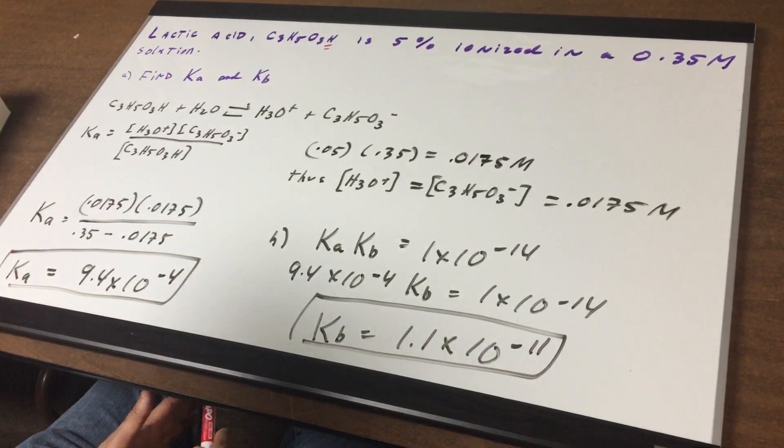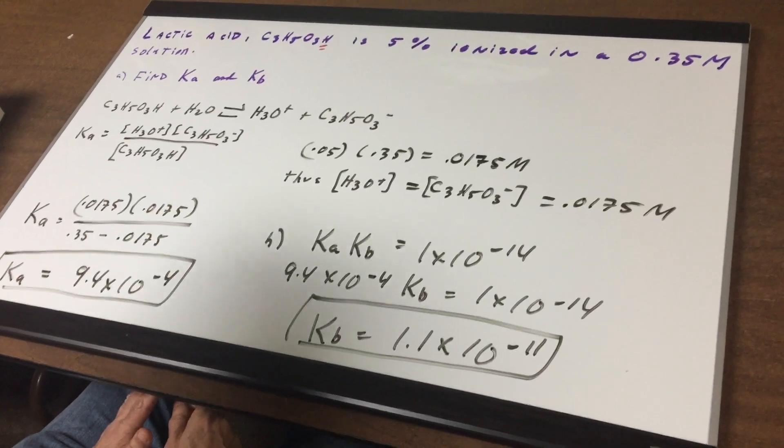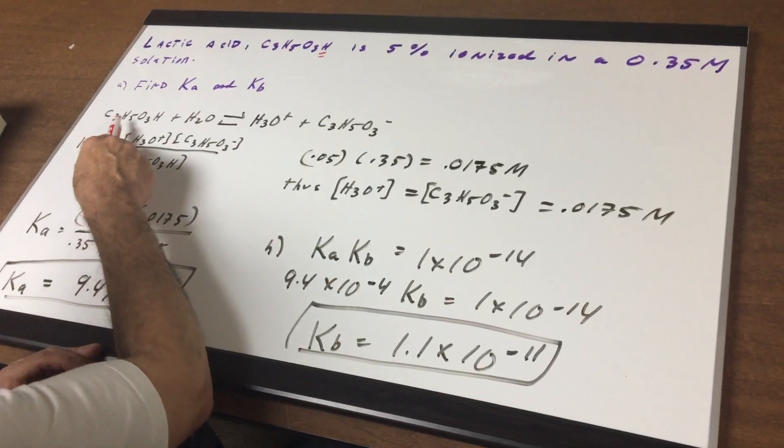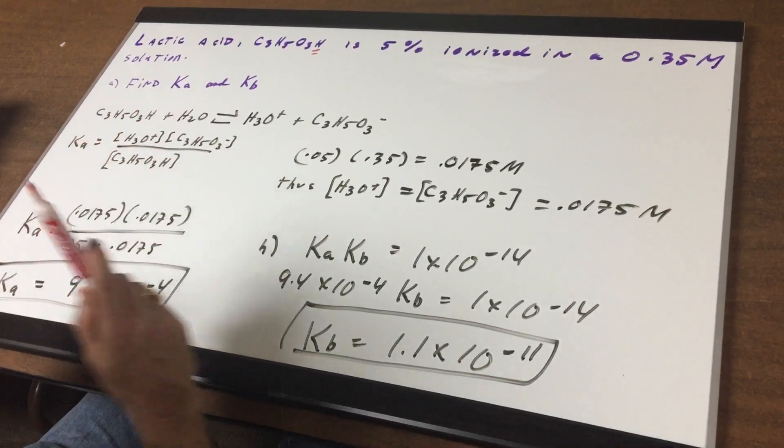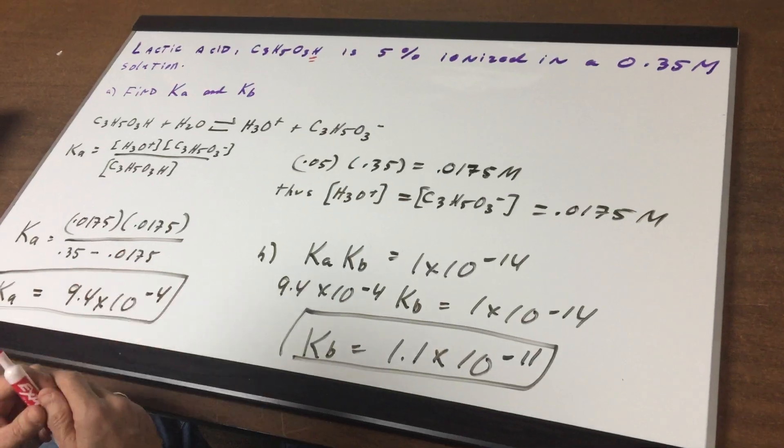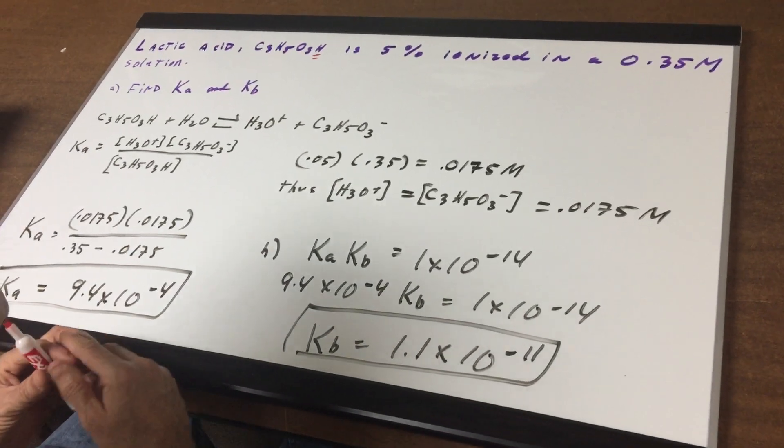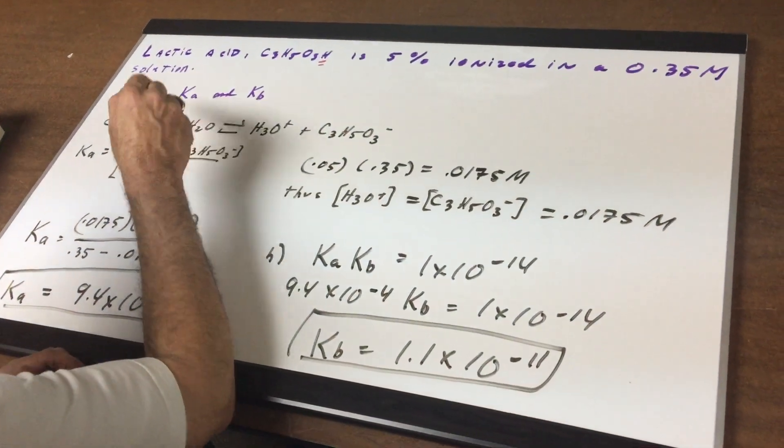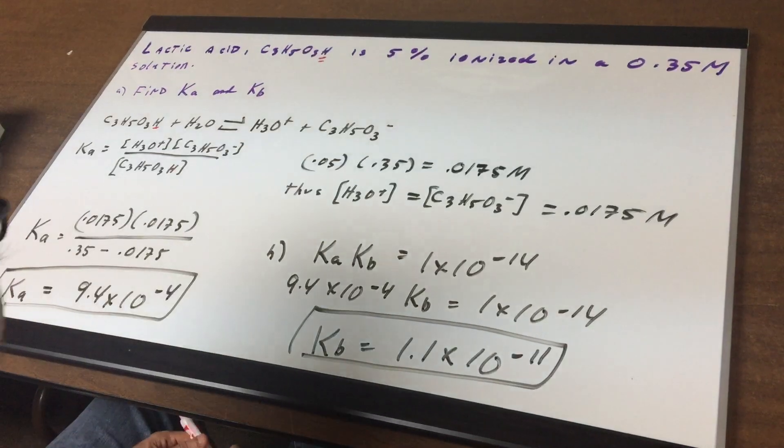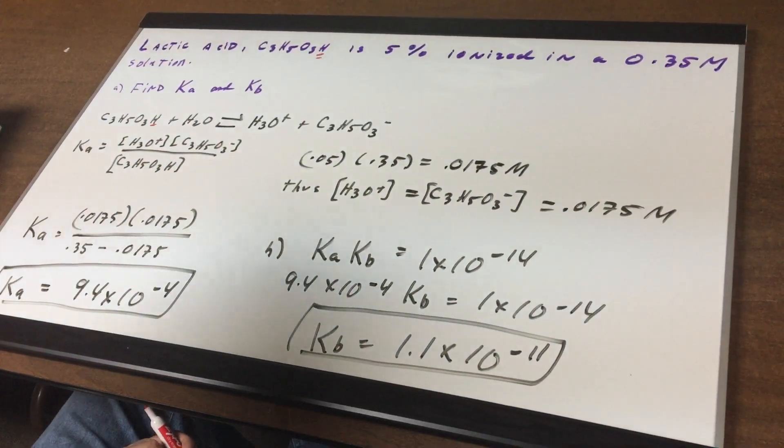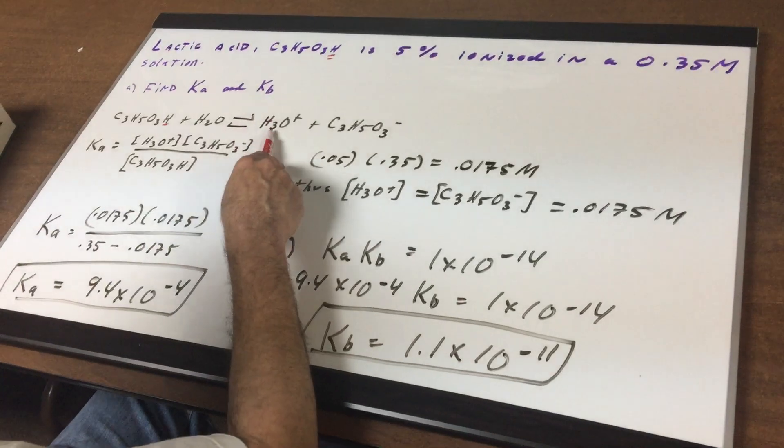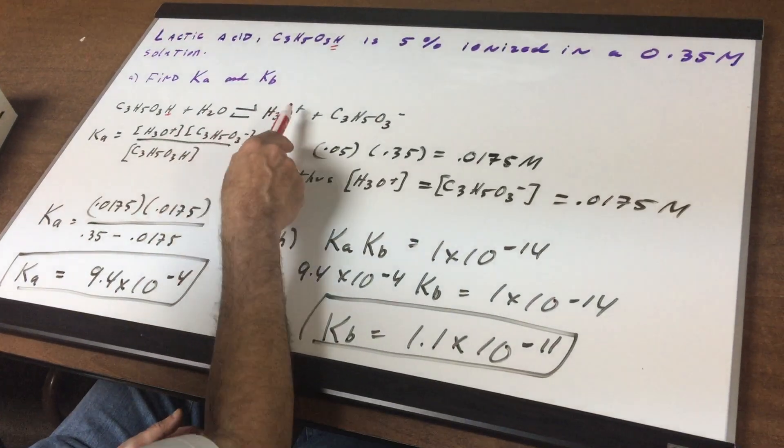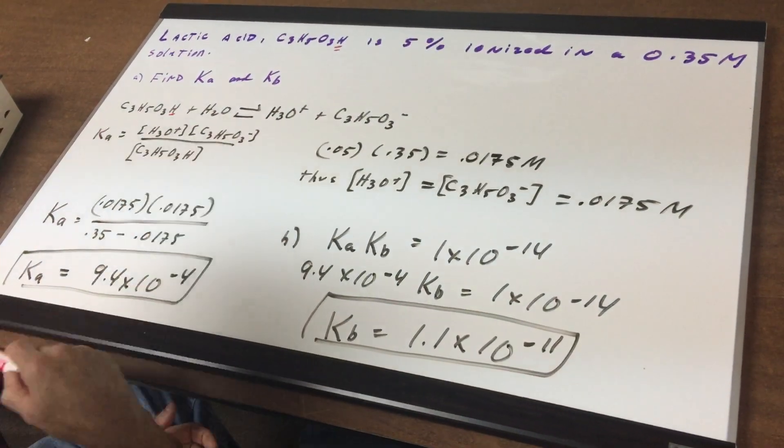Well the first thing that you would do on any reaction is to always write the expression for the reaction. So we're going to take the C3H5O3H and we put it in water. We will always put it in water in general chemistry, that will always be the assumed solvent unless otherwise noted. Since it's going to give off an H we end up getting H3O+ plus C3H5O3- so we get hydronium ions and lactate produced. Next move is write the Ka which is the products divided by the reactants and we don't use the water.